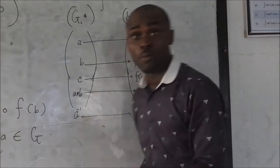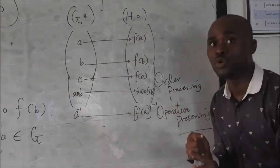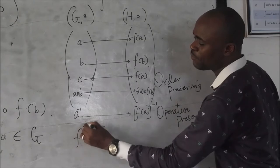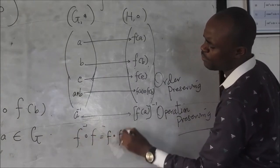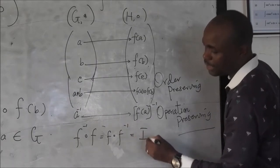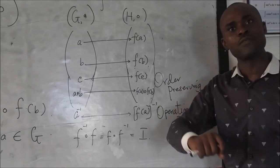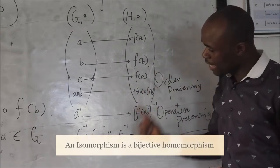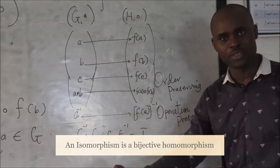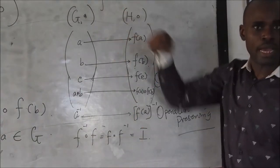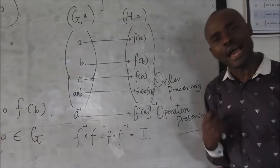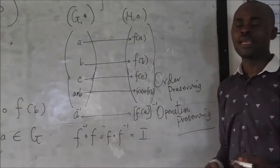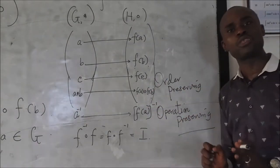We will be talking about homomorphism. Whenever we have a homomorphism that is onto and one-to-one at the same time, and the inverse satisfies F inverse of F equals F of F inverse of any element giving you the identity, then we say that this is an isomorphism. An isomorphism is a bijective homomorphism. Whenever homomorphism is bijective — that is one-to-one and onto at the same time — then we say it is an isomorphism. We also have monomorphism for one-to-one, epimorphism, and automorphism.